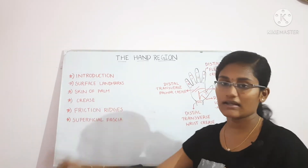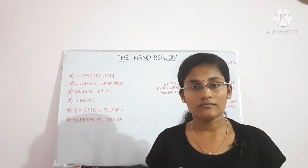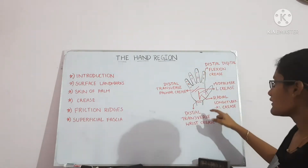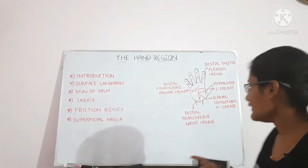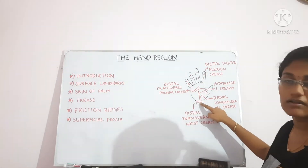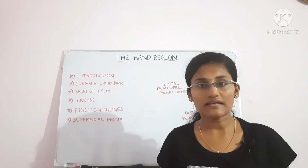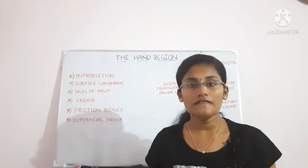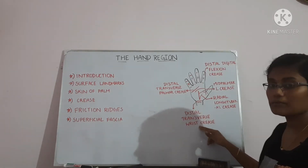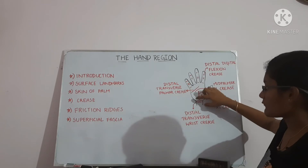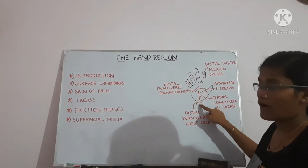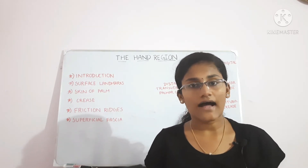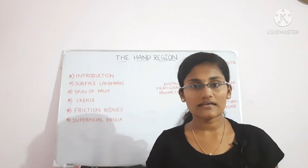Creases can be present at the wrist, the palm, and the digits. At the wrist region there are two creases: the proximal transverse wrist crease, which is present at the radiocarpal joint, and the distal transverse wrist crease, which is present proximal to the flexor retinaculum. These creases are produced by flexion — when we flex the hand, the skin folds in that area and the creases are formed.